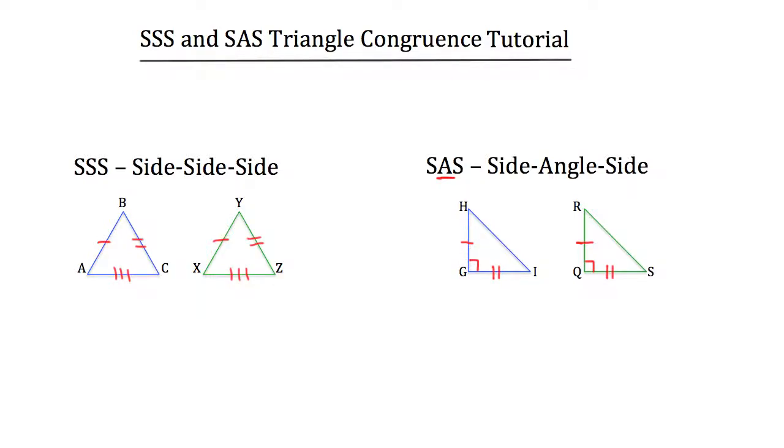You can tell that this angle, angle G, is between the congruent sides GH and GI that are congruent with triangle QRS, sides QR and QS. Angle Q and angle G of these two triangles are congruent to each other.